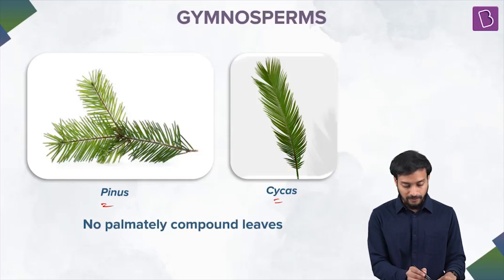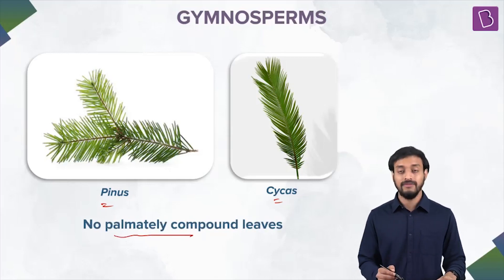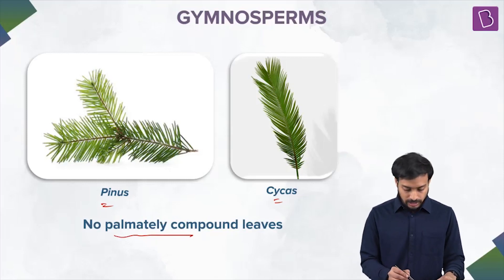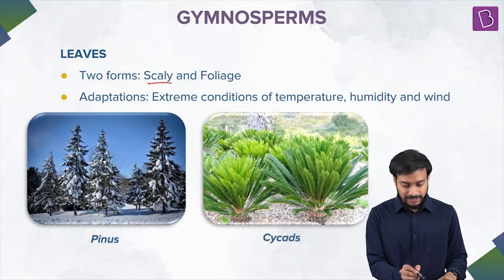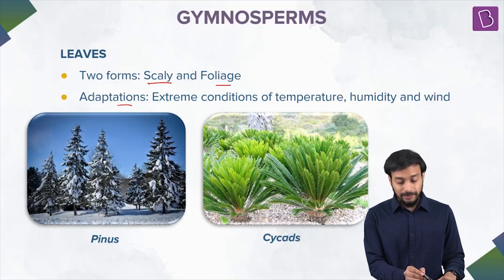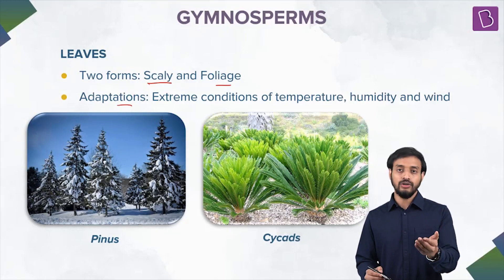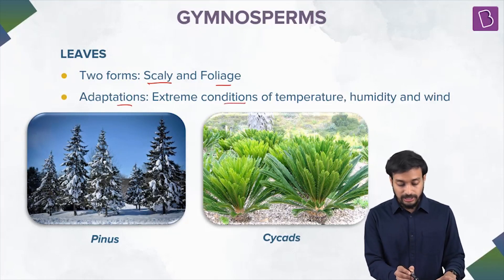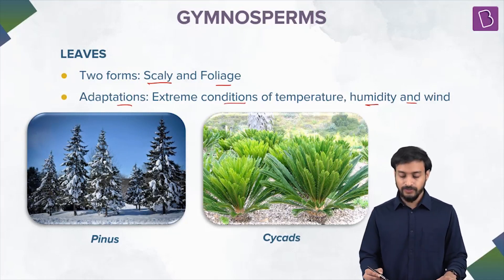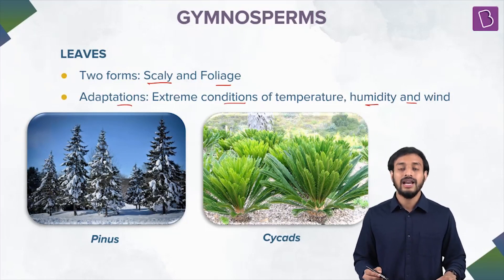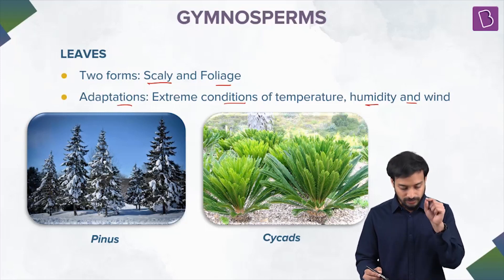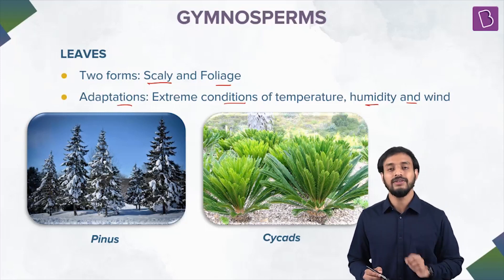Gymnosperms do not have palmately compound leaves — they only have pinnately compound leaves. The leaves can be scaly or foliage, and these adaptations help gymnosperms survive in extreme temperature conditions, including humid, windy, cold, and tropical regions like savannahs and deserts.